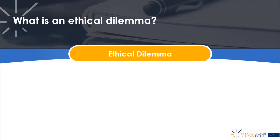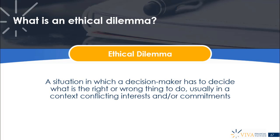Ethical dilemmas are really the most important consideration when applying ethics in the context of organizations. This is where the rubber meets the road — when you're faced with an ethical dilemma within the organization. An ethical dilemma is a situation in which a decision maker has to decide what is right or wrong, usually in a context of conflicting interests and commitments. When you have multiple stakeholders with different claims on the organization's activities, and actions compromise some people's interests but not others, those are typically your ethical dilemma situations.